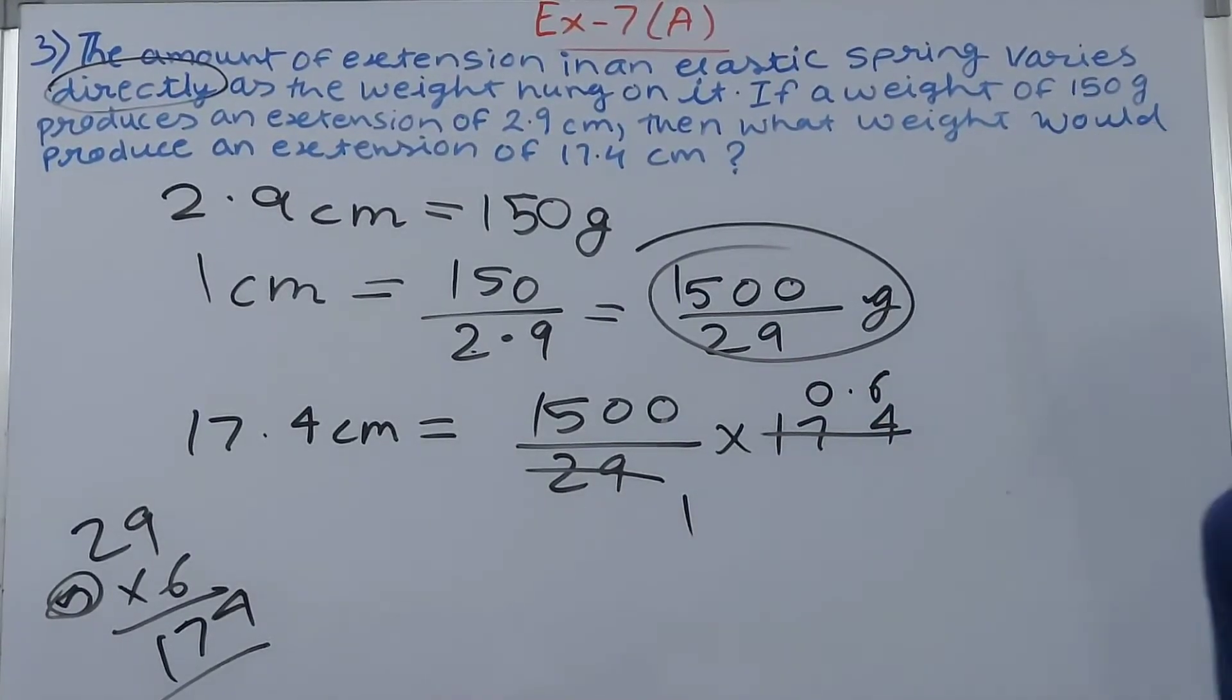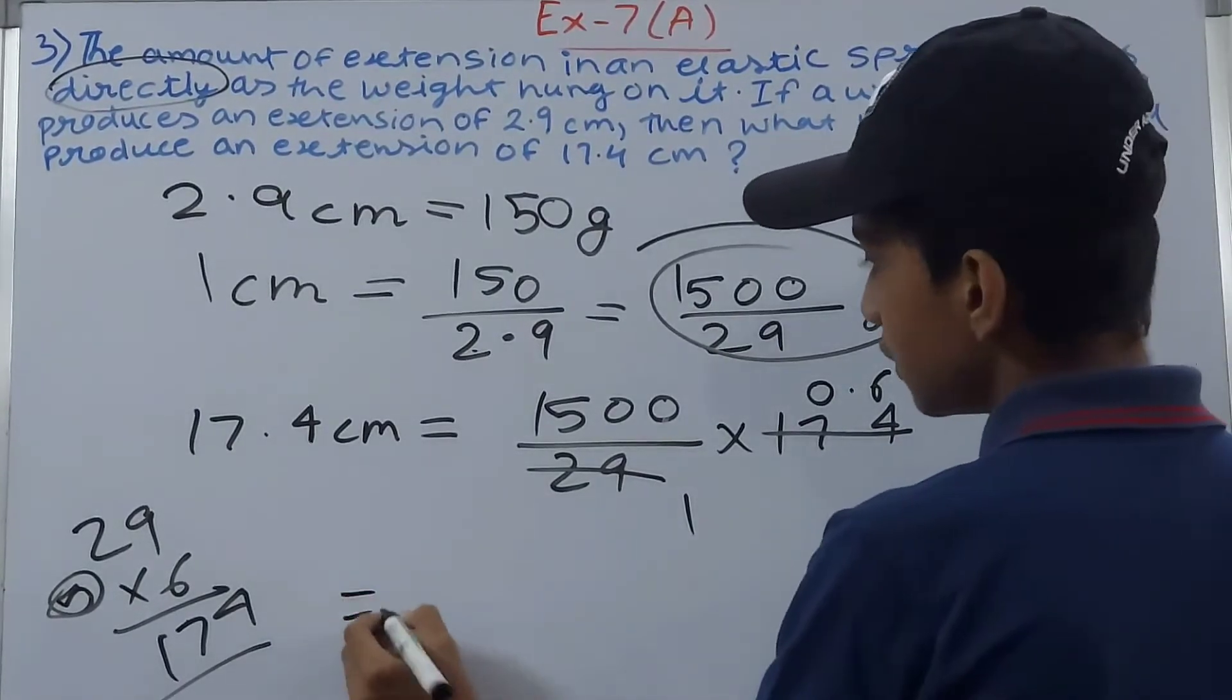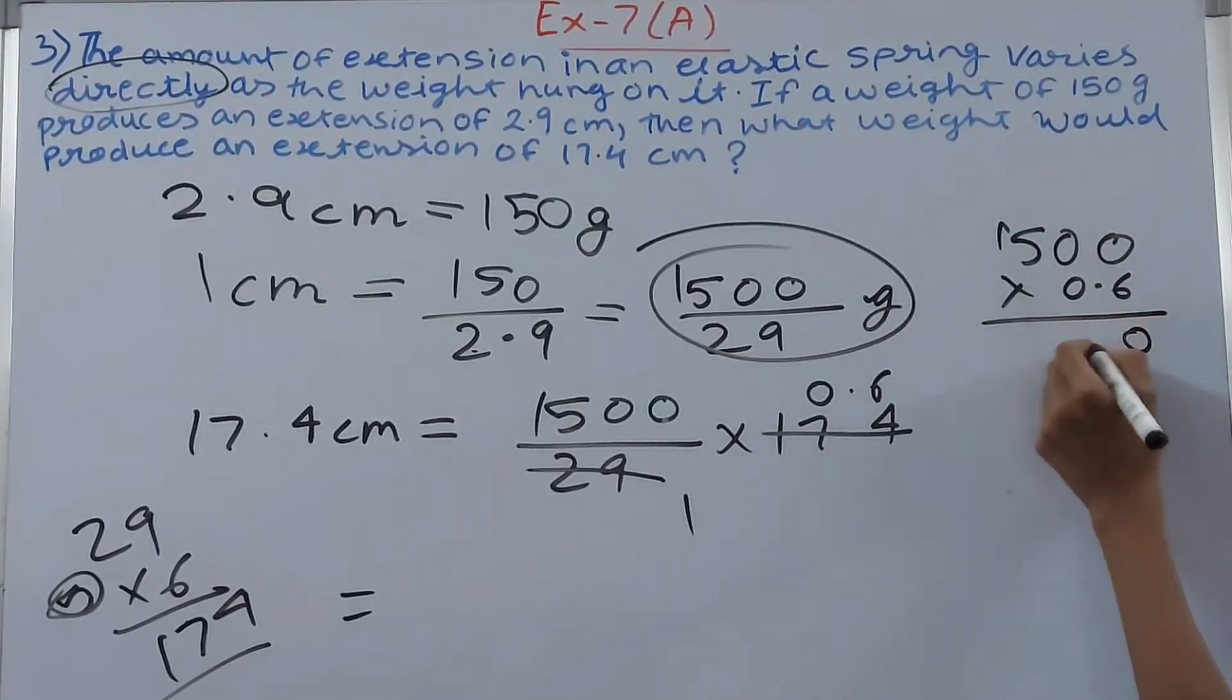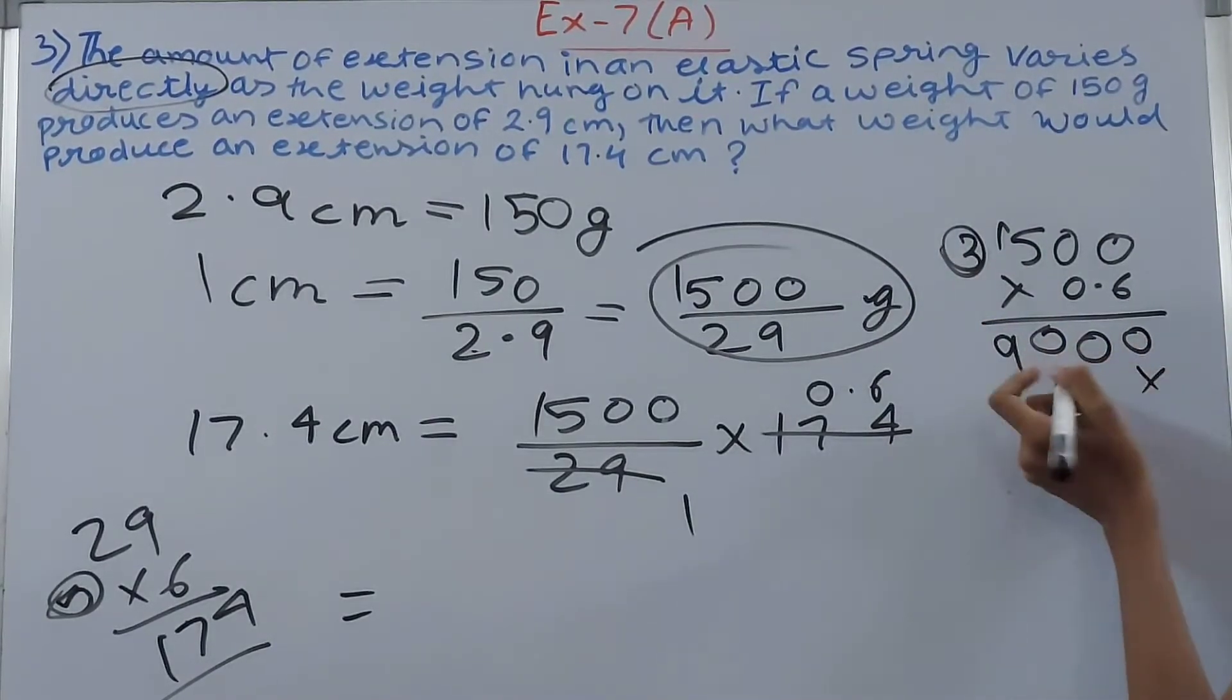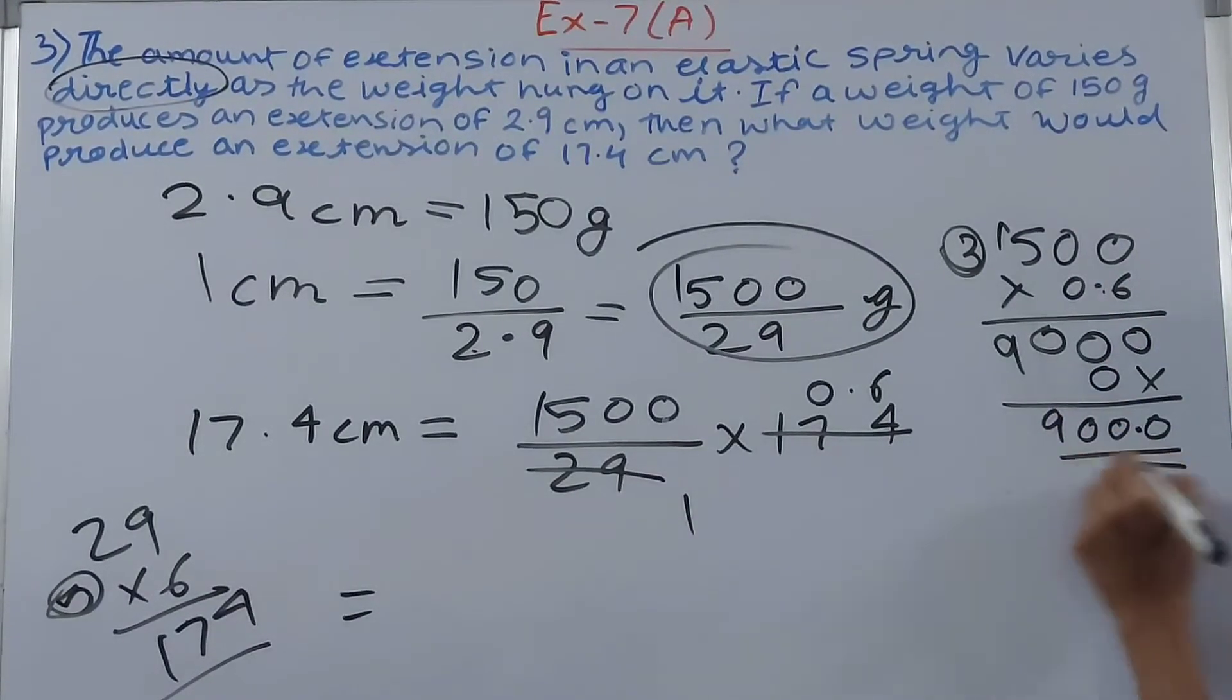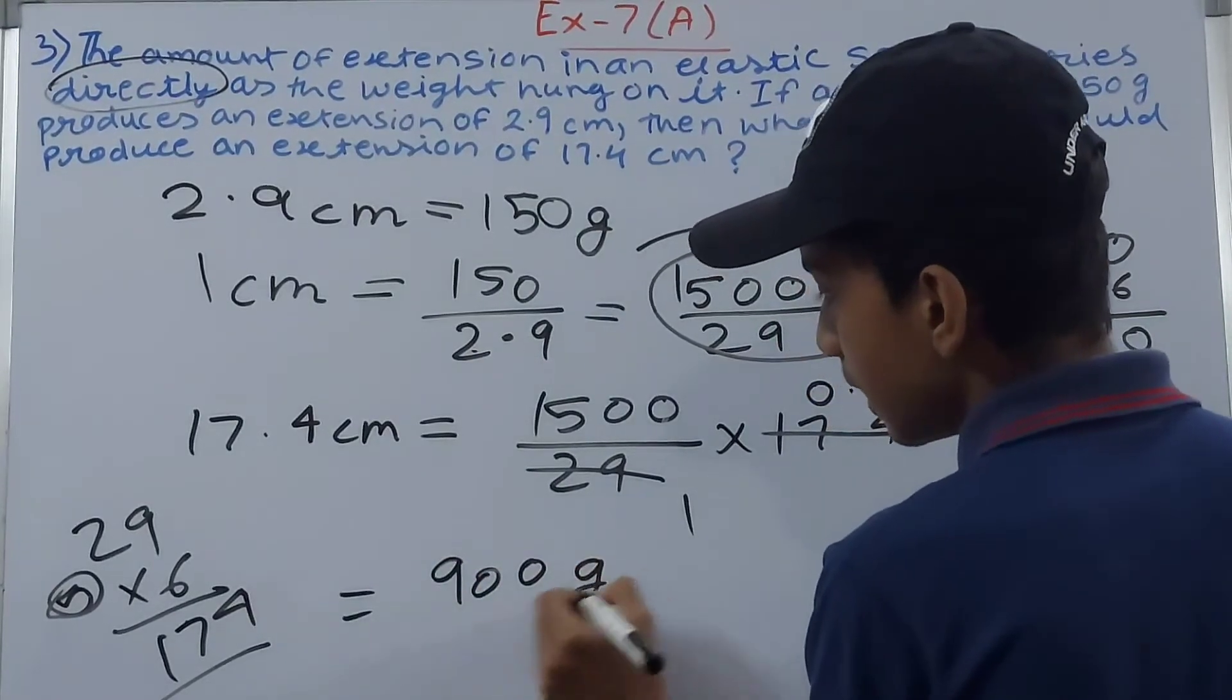1500 into 0.6. So 6, 0, 0, 0 and 3, so 9 here, then again 1, 0, so 9000 basically. And one decimal point, so 900 grams. This becomes our answer. So a weight of 900 grams will produce an extension of 17.4 centimeters.